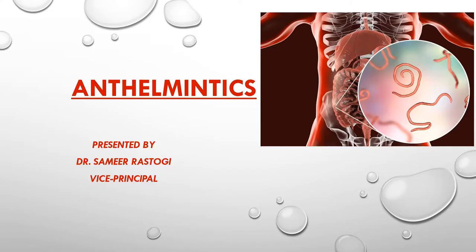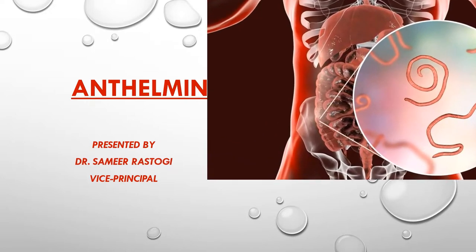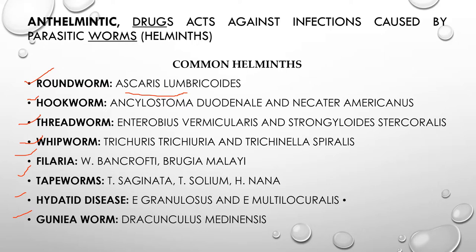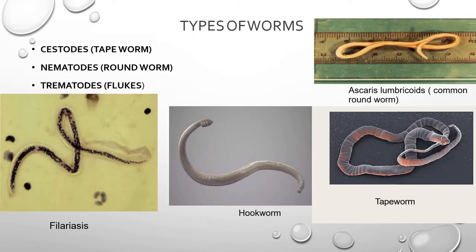Hello students, today we will discuss anthelmintics. Anthelmintics are the drugs which are used against infections caused by parasitic worms, that is helminths. The term 'helminth' is used for worms that generally have a long, flat, or round body. Common helminths include roundworm, hookworm, threadworm, whipworm, filaria, tapeworm, hydatid disease, and guinea worm.